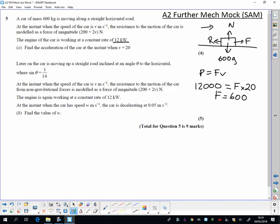We then can use F equals MA. So our resultant force is our driving force minus our resistance. So our resistance is 200 plus 2 times 20. That's V. So bring that into our resistance equation.